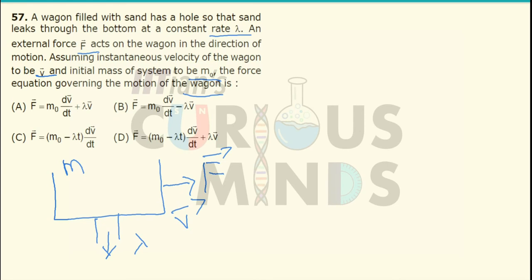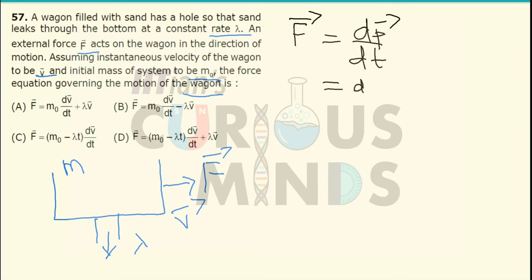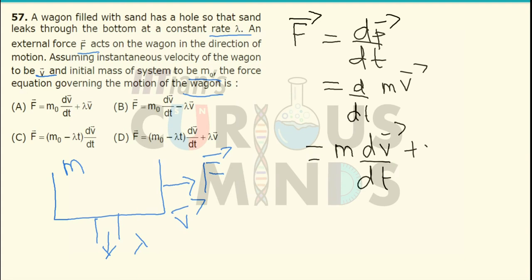Since there is no frictional force, the force in the forward direction will be equal to dp vector divided by dt. Now p vector can be written as m into v vector, where both m and v are variable. So I can write this as m times dv vector divided by dt plus v vector times dm by dt.